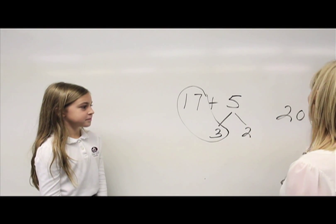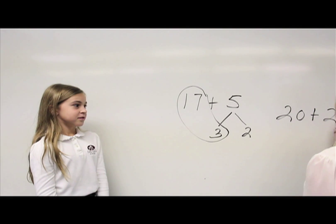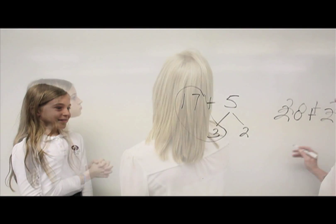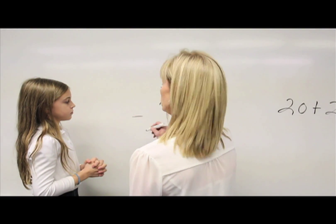20 plus I have 2 left over and that equals 22, very good. Let's do 76 minus 32 and we're not going to do any regrouping yet, okay?